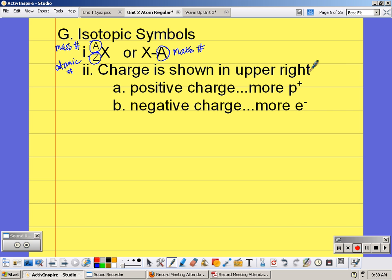If there's a charge then it's shown in the upper right, so if we have our symbol it would be up here as a charge. If it's a positive charge that means we have more positive particles or more protons. If it's a negative charge then we have more negative particles or the electron.